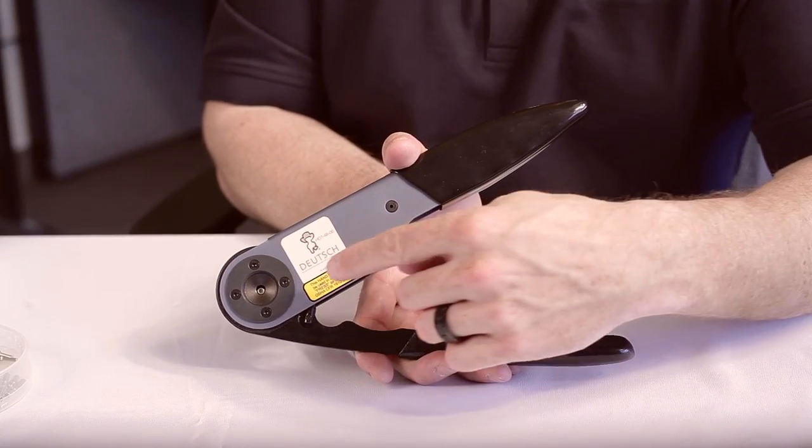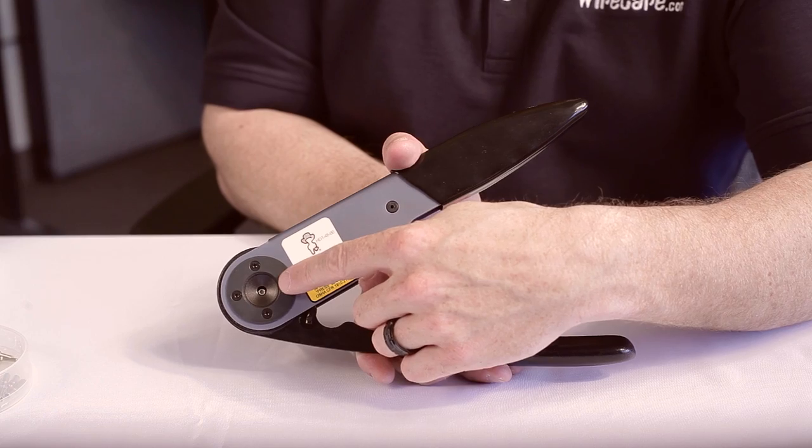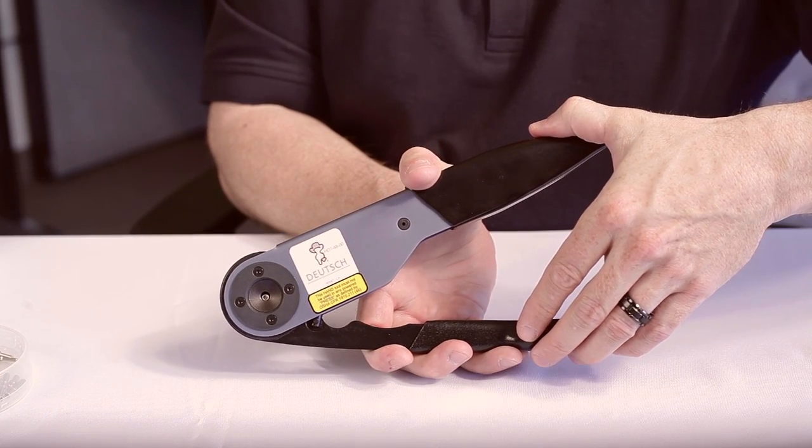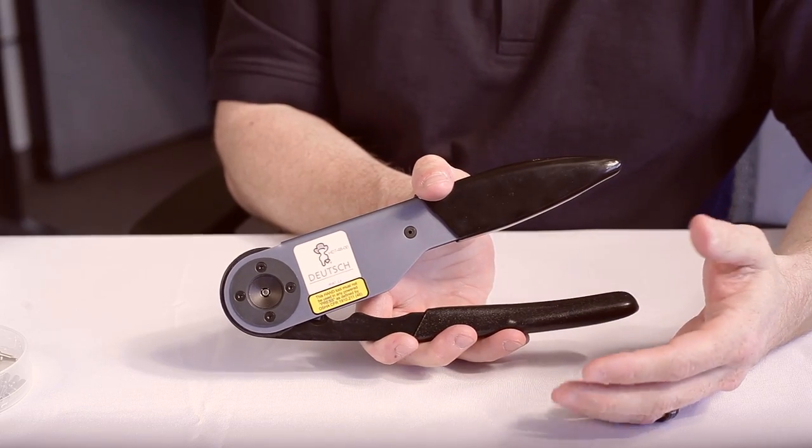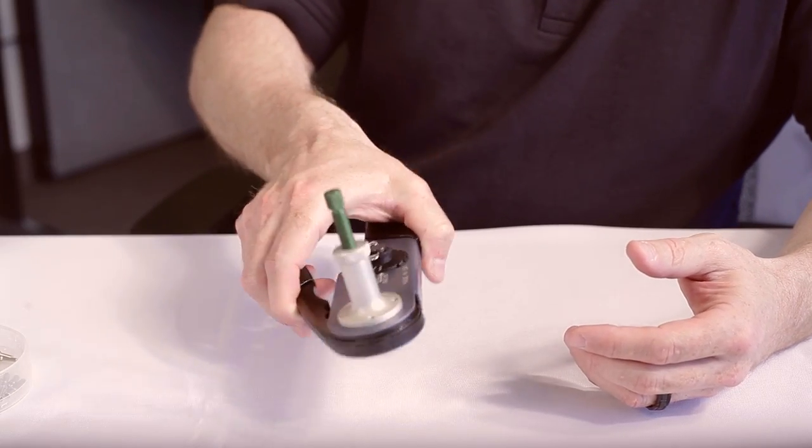With the contact seated in the tool, squeeze the handles together slightly until you hear a single click. This will ensure that your contact is being held firmly in the crimping jaws.